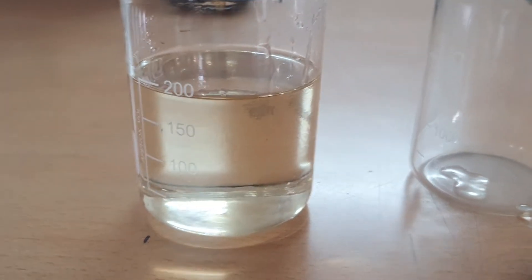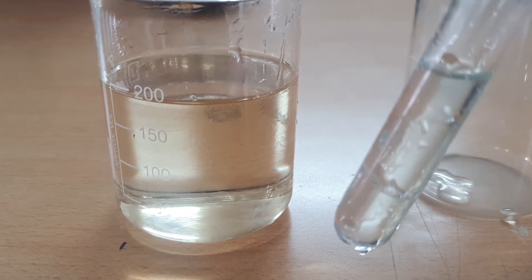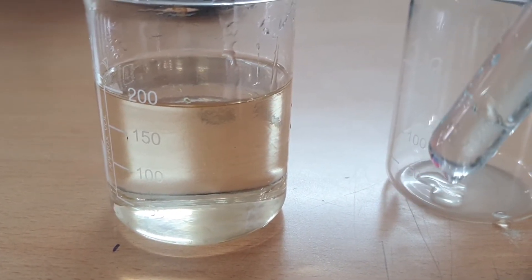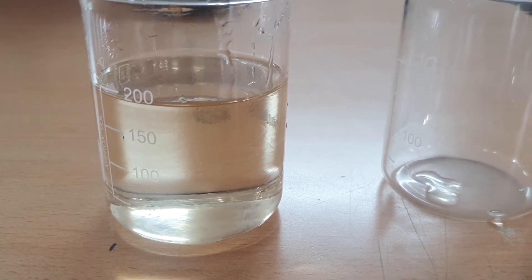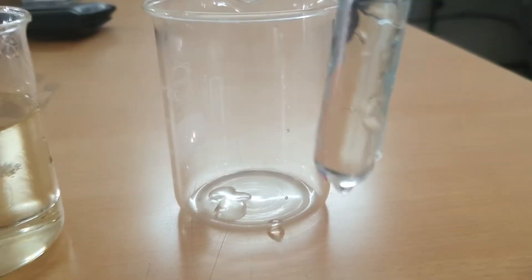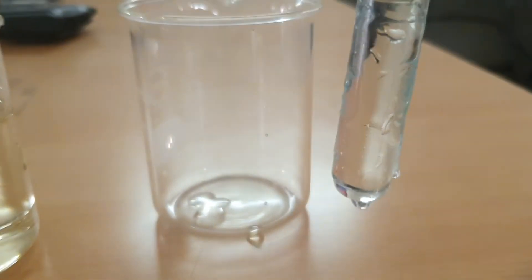You can see the level of both is different. One is the test tube which has the glycerin, another is the beaker which has the glycerin. This test tube in the air basically behaves like a converging lens. You can see from here the images are inverted.